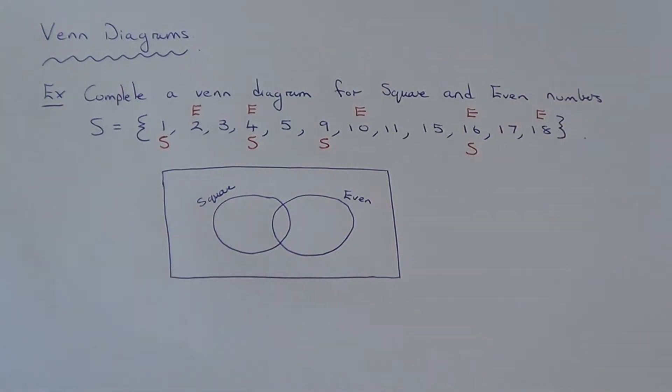So the next square number is 5 times 5 which is 25. So we don't have 25 in this set of numbers that we're doing today. So let's now put these numbers into the Venn diagram.